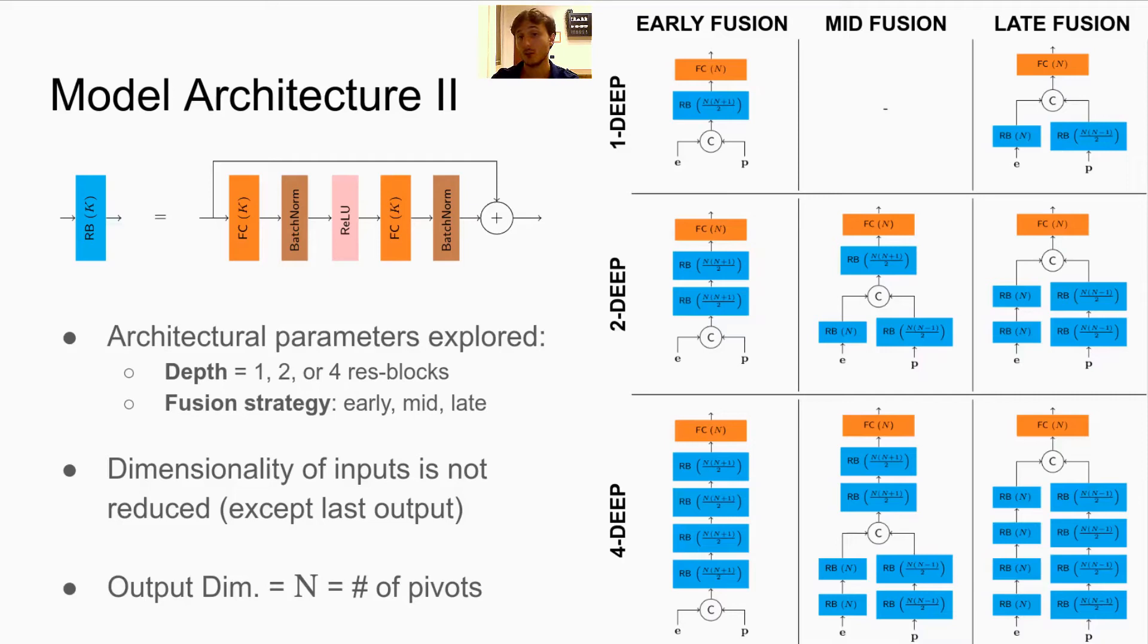In this preliminary phase, in each residual block, we choose to set the output dimensionality as the input one, and not to put any dimensionality reduction or bottlenecks in the model. The dimensionality of the last output can be chosen arbitrarily, so we set it to be the number of pivots N, used during the computation of the pivoted embedding, just to compare with other methods that produce embeddings with similar dimensionality.